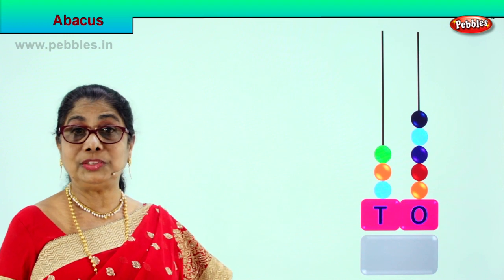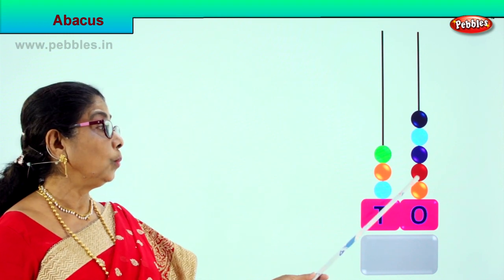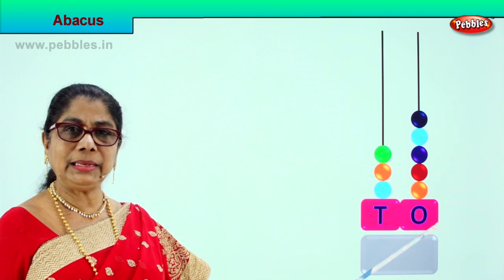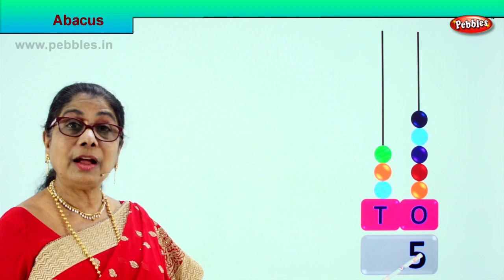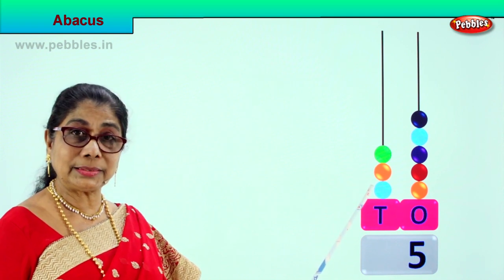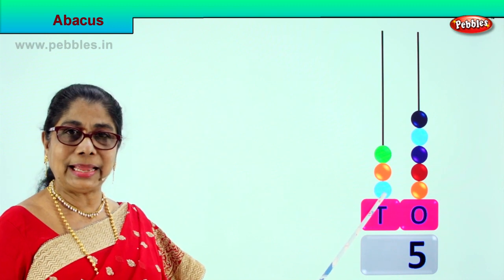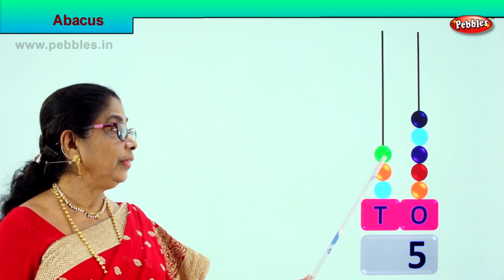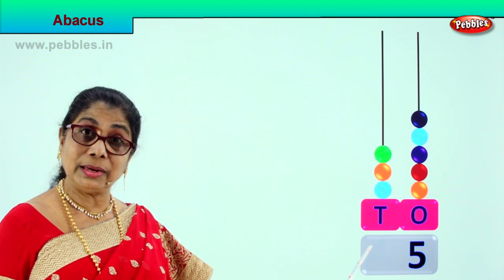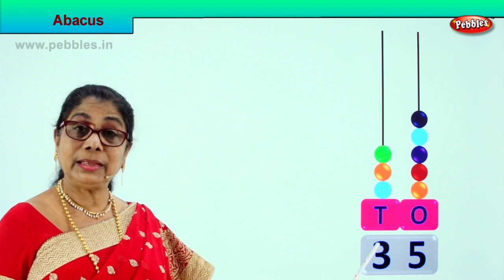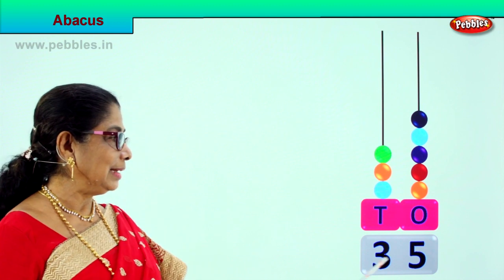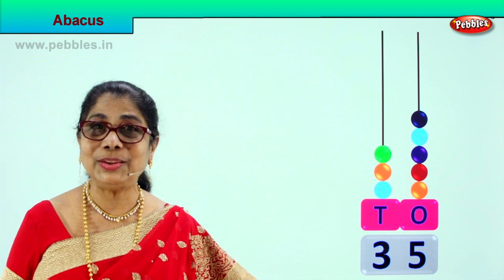Let's count as usual. The ones place: 1, 2, 3, 4, 5. There are 5 beads, so we write 5 — 5 ones. Now we go to the tens place. Each bead is 10. Counting tens: 10, 20, 30 — 1 ten, 2 tens, 3 tens. We write 3 down here — that is 30. 3 tens, 5 ones: 35.